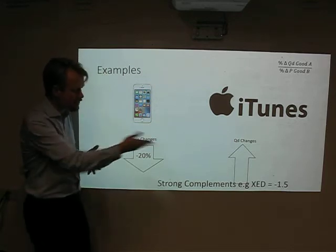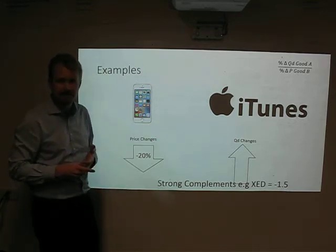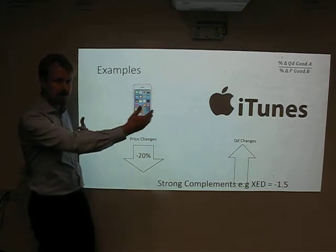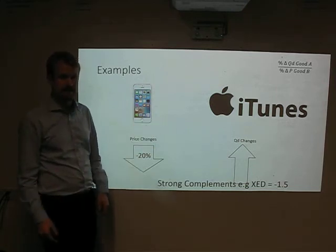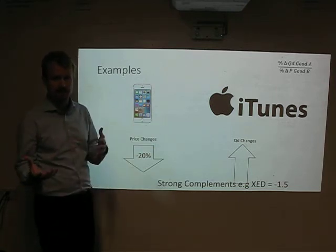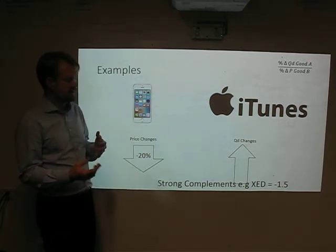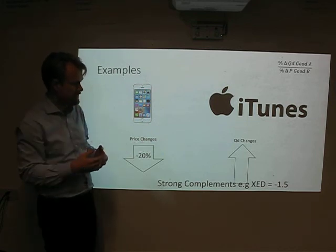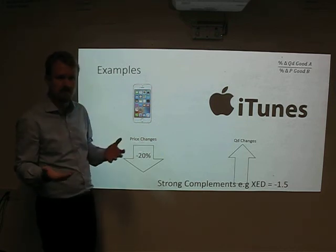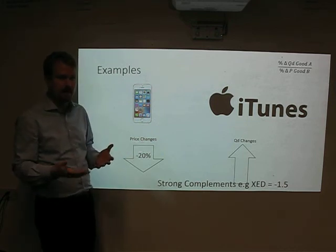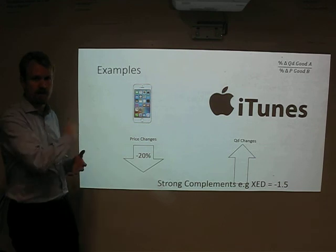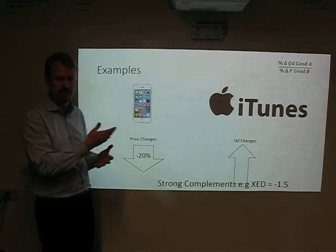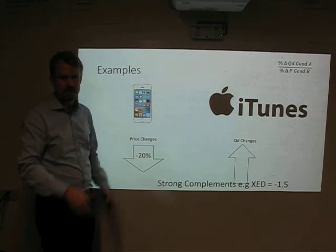Every single one of these figures I put in as examples should hopefully match up on the number line to indicate whether they were elastic or inelastic. For example, a strong complement with an XED of minus 1.5 — since minus 1.5 is farther away from 0 than 1, it is therefore an elastic product.